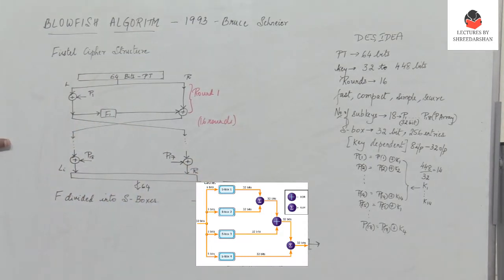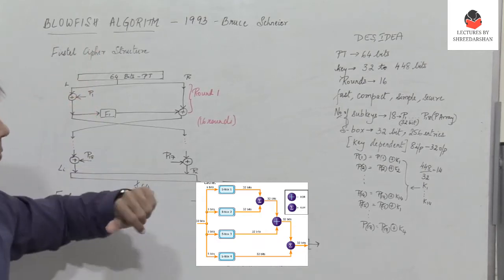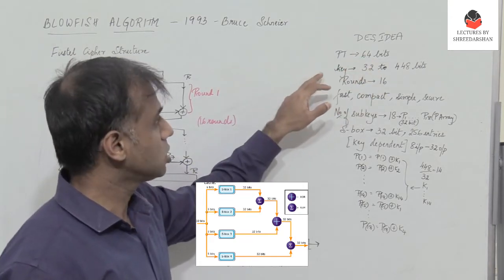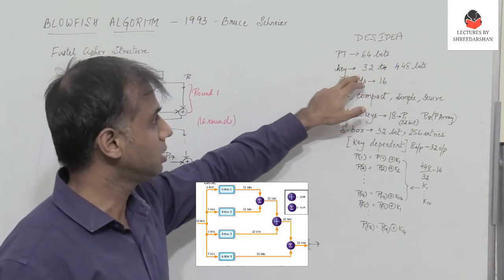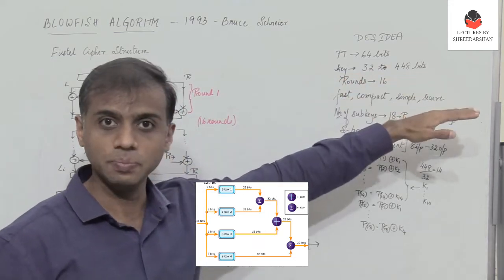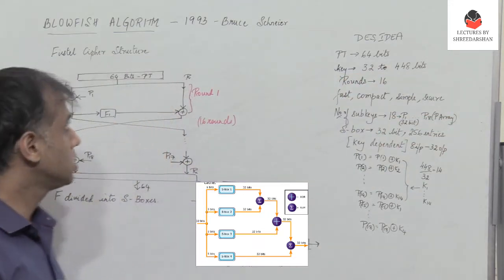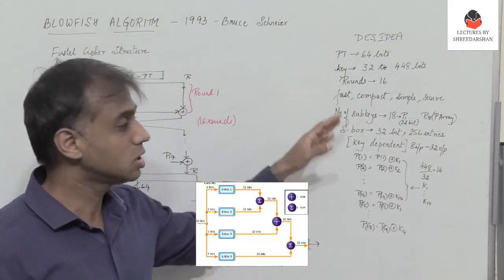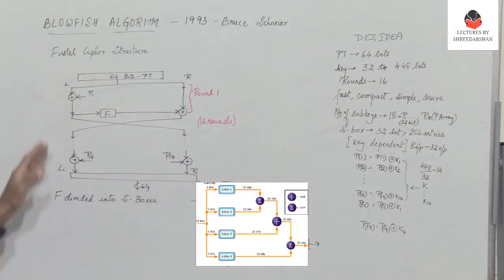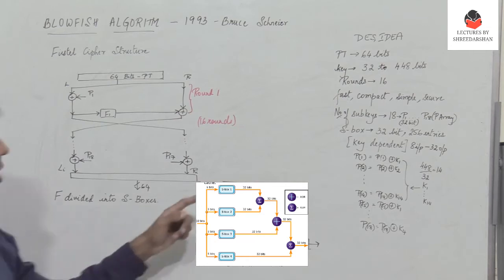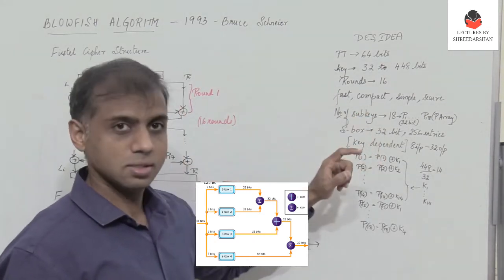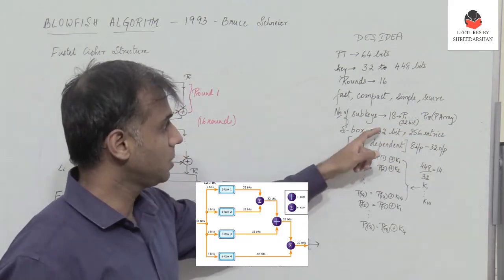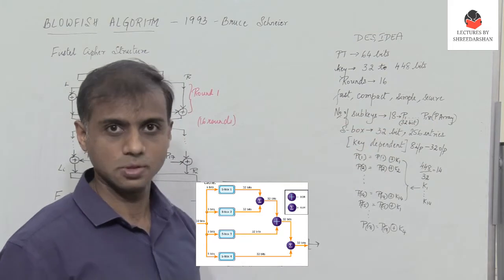The Blowfish algorithm is a symmetric cipher having a plain text length of 64 bits. The key length is variable, from 32 to 448 bits. Blowfish uses the Feistel cipher structure, which has 16 rounds of operation. There are 18 subkeys, P1 to P18, referred to as the P-array, and each subkey is of length 32 bits.